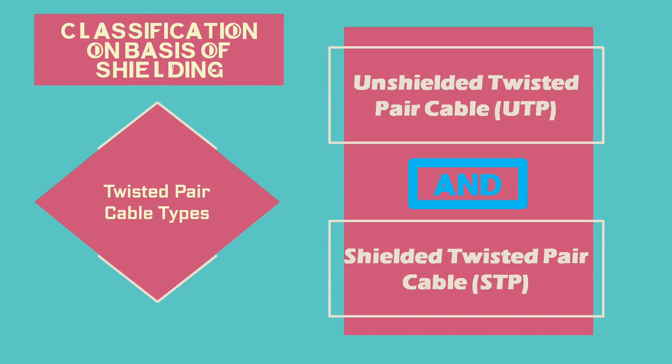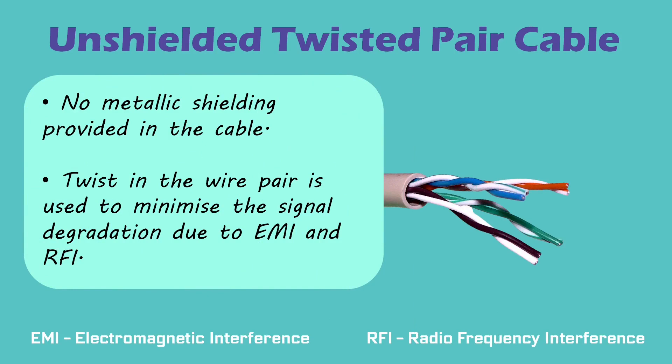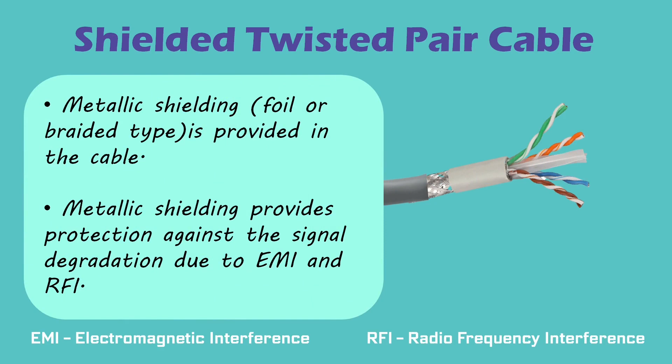Twisted pair may be broadly classified into two categories: Unshielded Twisted Pair (UTP) cable and Shielded Twisted Pair (STP) cable. UTP cable does not have any type of metallic shielding and utilizes the twist in wire pairs to limit signal degradation caused by electromagnetic interference (EMI) and radio frequency interference. STP cables have metallic shielding, which could be of foil type or braided screen type, and utilizes that shielding for protection against EMI and radio frequency interference.